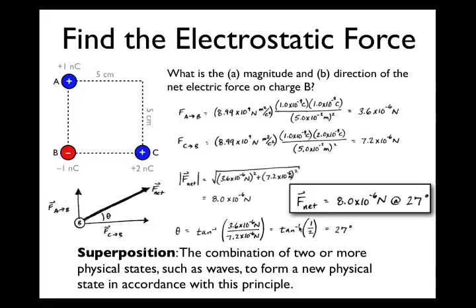Superposition — which we've actually done here without saying the word — is the combination of two or more physical states, such as forces, to form a new physical state. It's a fancy way of saying: if I have a complicated situation, I can figure out what the force is from object A, figure out the force from object C, and combine those two forces to find the overall force. If I had a fourth charge, I could add a third force, and keep doing this until I've added up all the forces. The net force is then the sum of all of those. This concludes the lecture on electric charge, Coulomb's law, and superposition.